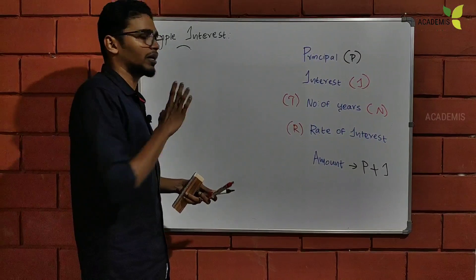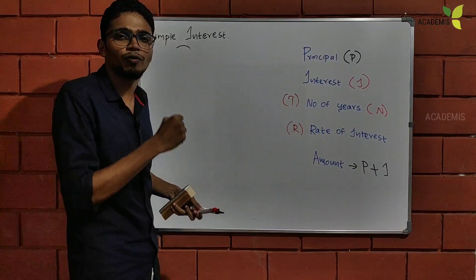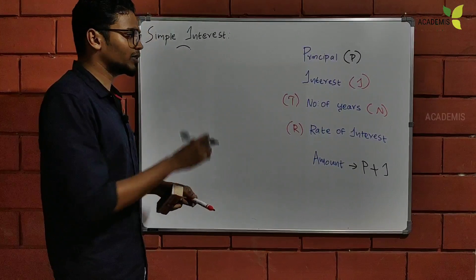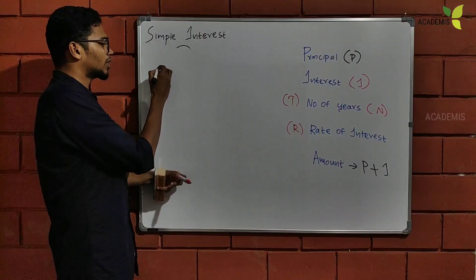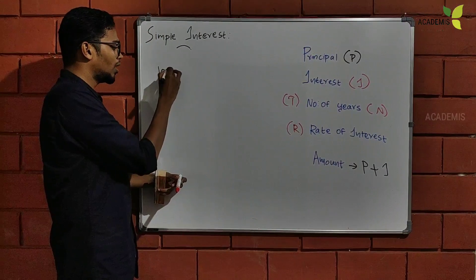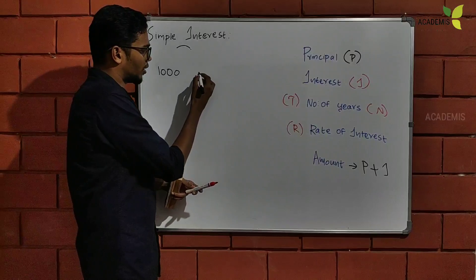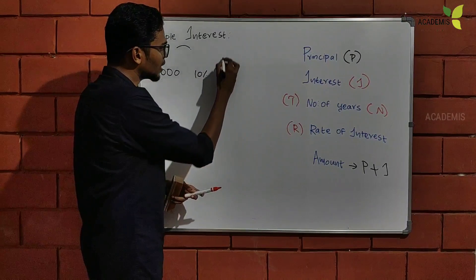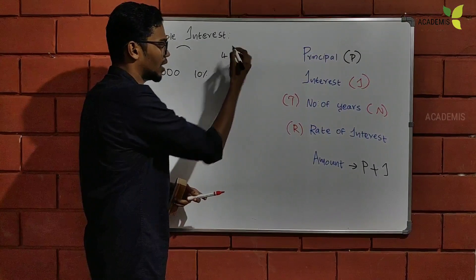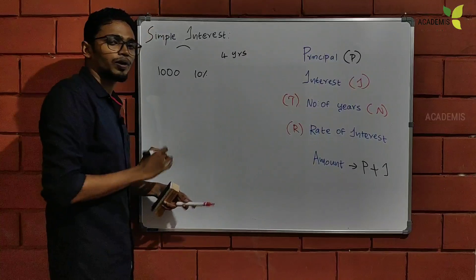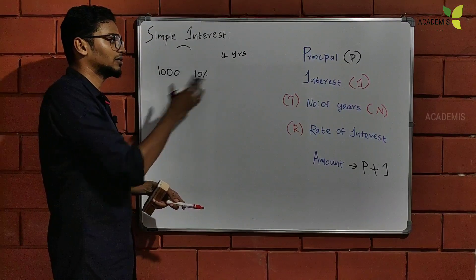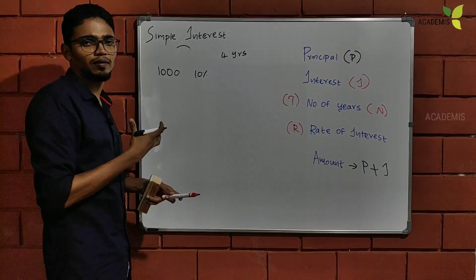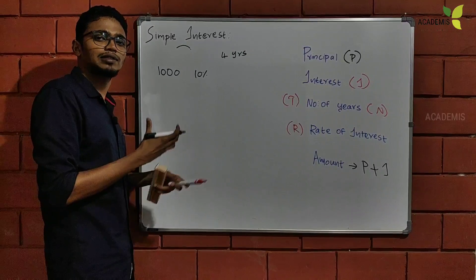This is what I am going to say. How do we solve a simple interest problem with a simple formula? We will start a small example. One where 10% of the money is invested in 4 years.